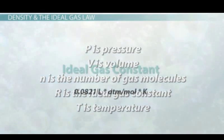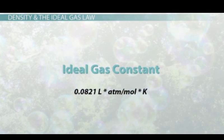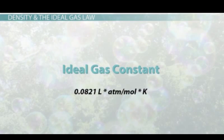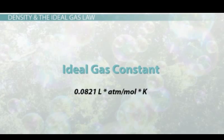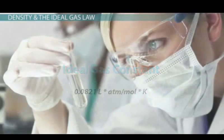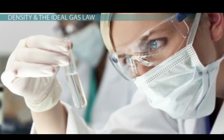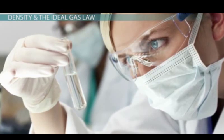The ideal gas constant is 0.0821 liters times atm divided by moles times kelvin. Generally, constants are values that have been previously verified by scientists, and we can insert directly into equations.